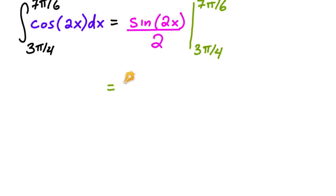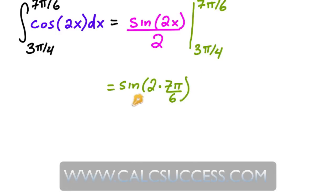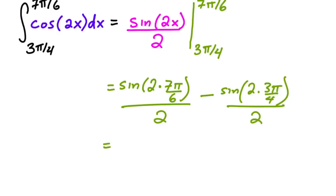So we're going to go from 3π over 4 to 7π over 6. Then we plug in top minus bottom. So we're going to have sine of 2 times 7π over 6, all over 2 minus sine of 2 times 3π over 4 all over 2. Now here the 2 and the 6 reduce to 1 and 3. So this is really sine of 7π over 3, which from your unit circle is going to be root 3 over 2.